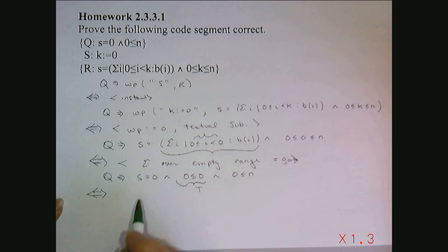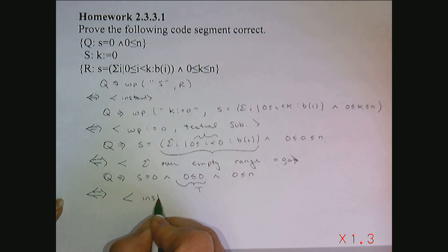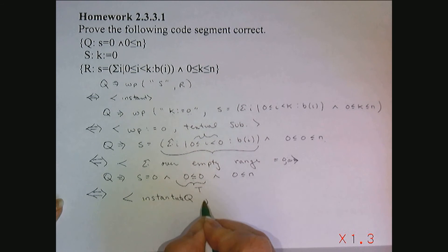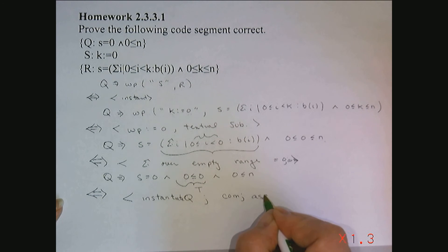So I can actually simplify further. First of all, I'm going to now instantiate Q and I'm going to use the commutative property as well as the associative property as well as and simplification.